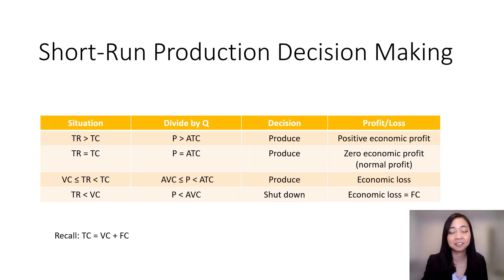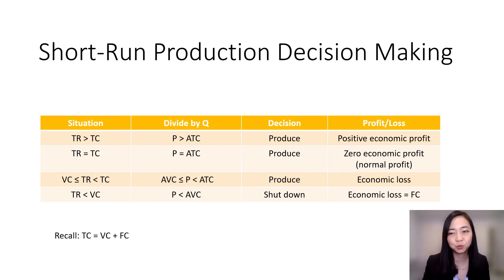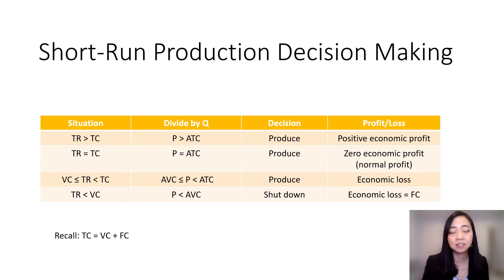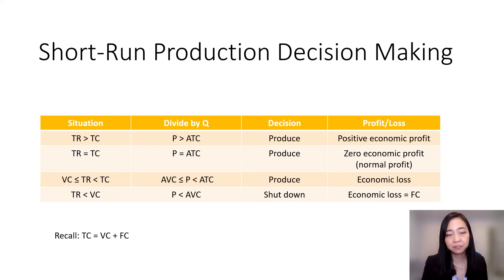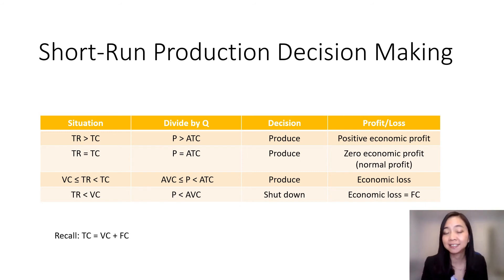Here is a short run production decision summary. We have four situations. First situation: if your total revenue is greater than your total cost — that means your price is greater than the average total cost — then you should produce and your firm is enjoying a positive economic profit. If your total revenue is equal to total cost, that means your price is equal to average total cost, then your firm should produce and your firm is earning a zero economic profit, also known as a normal profit.